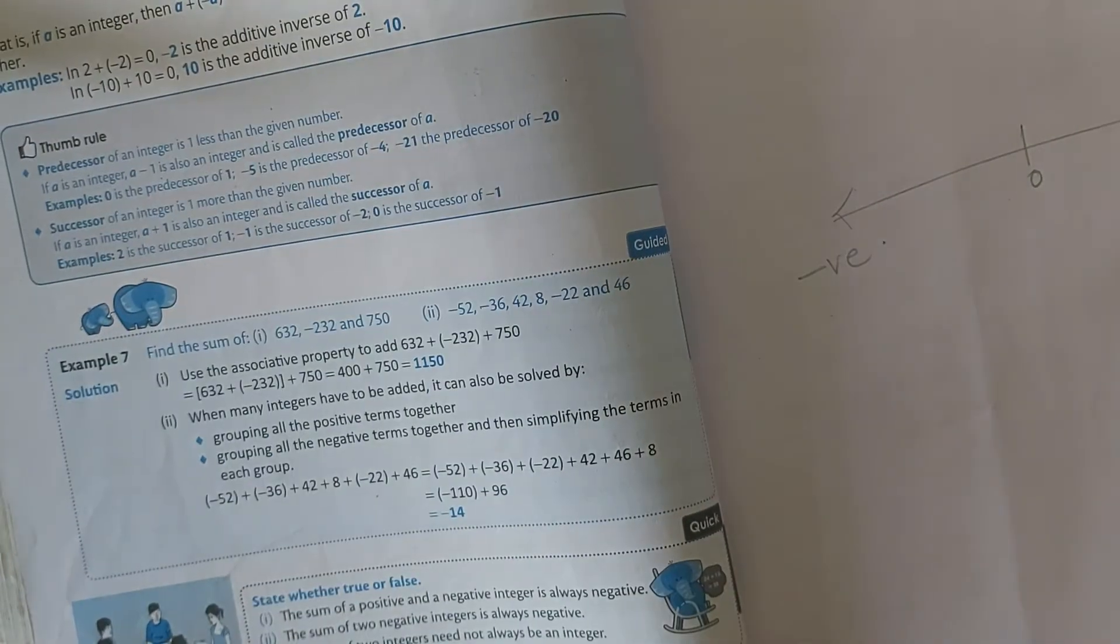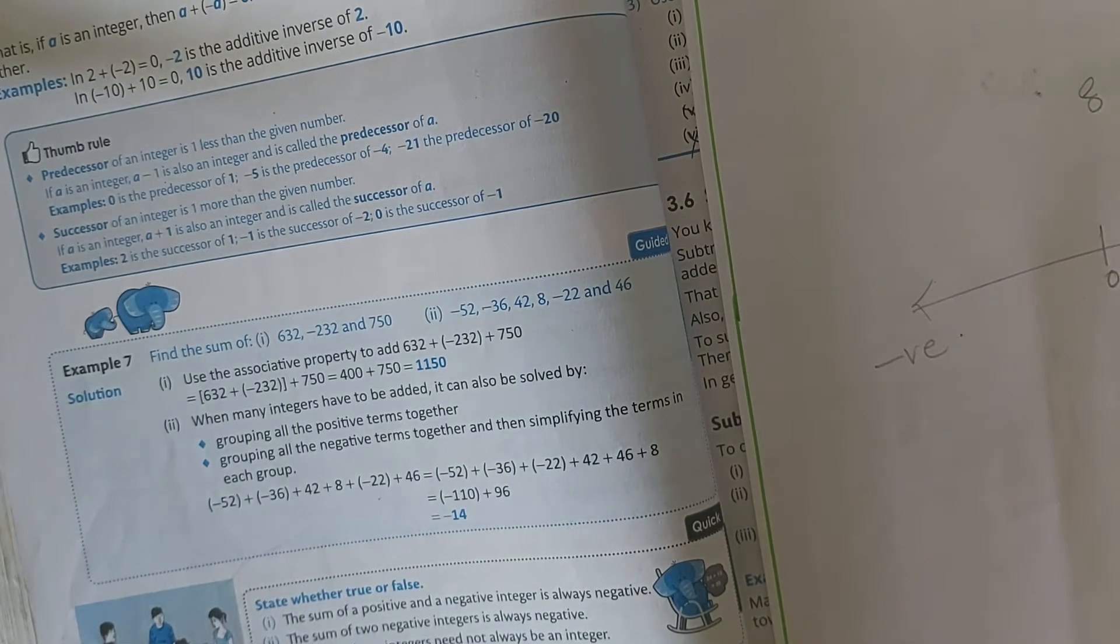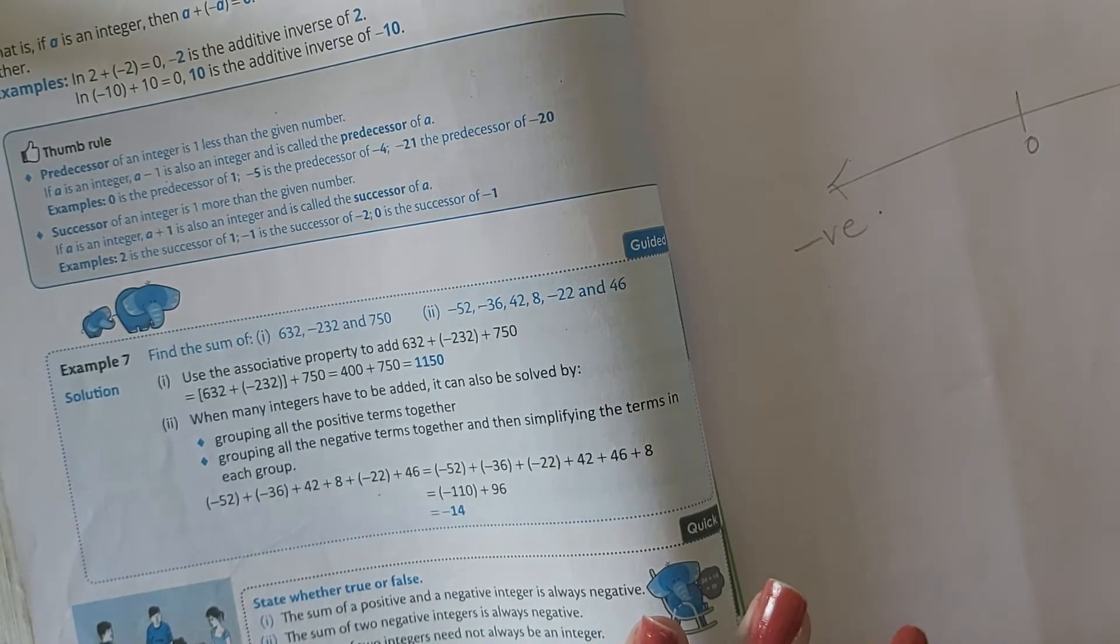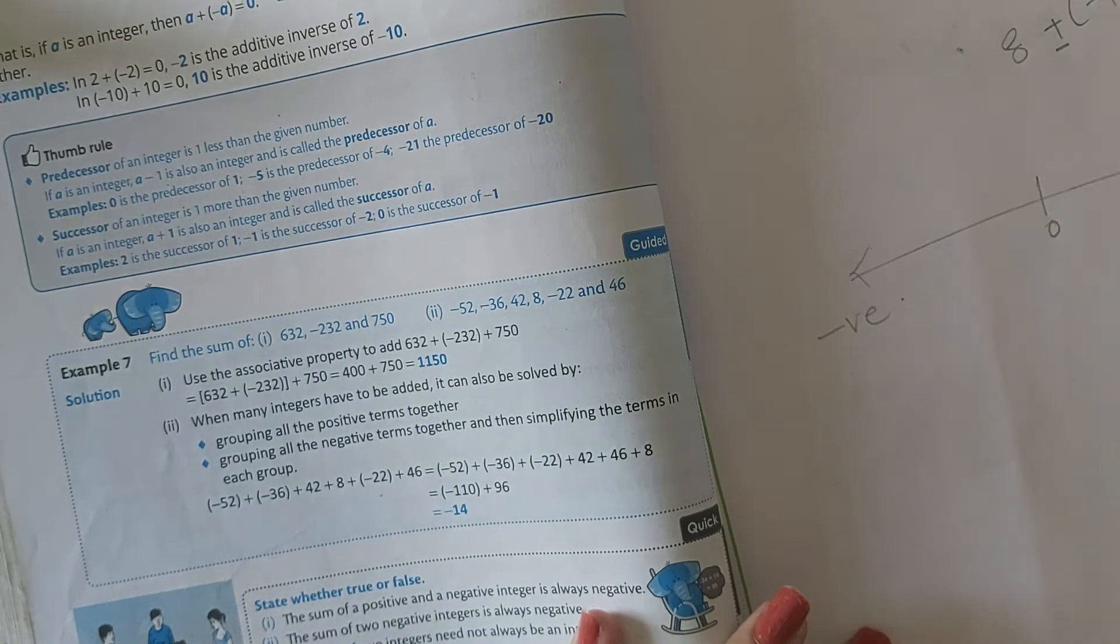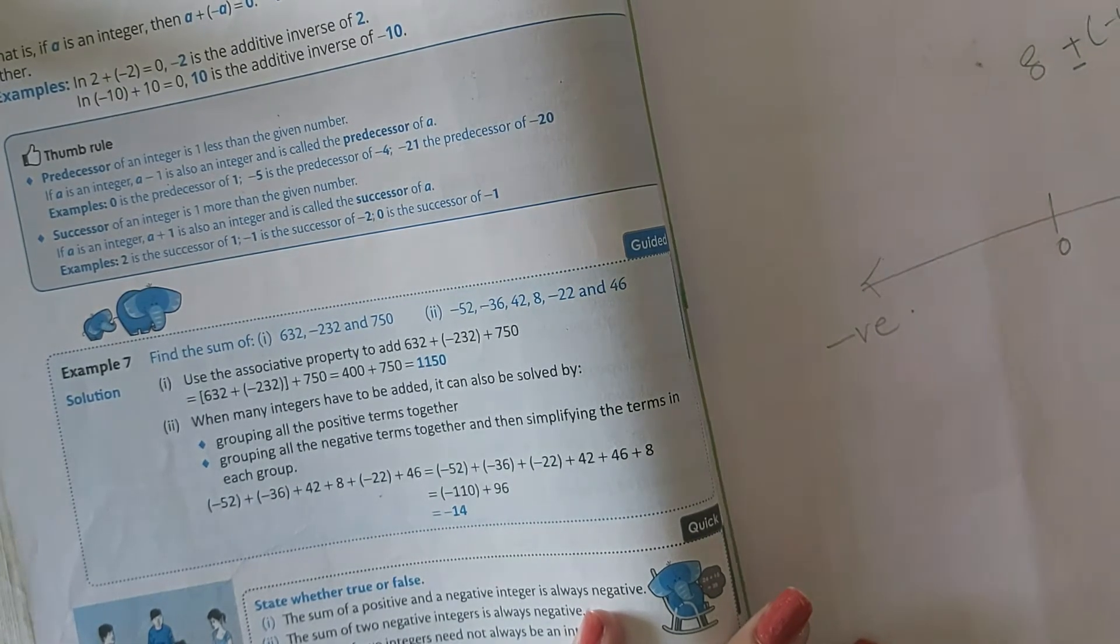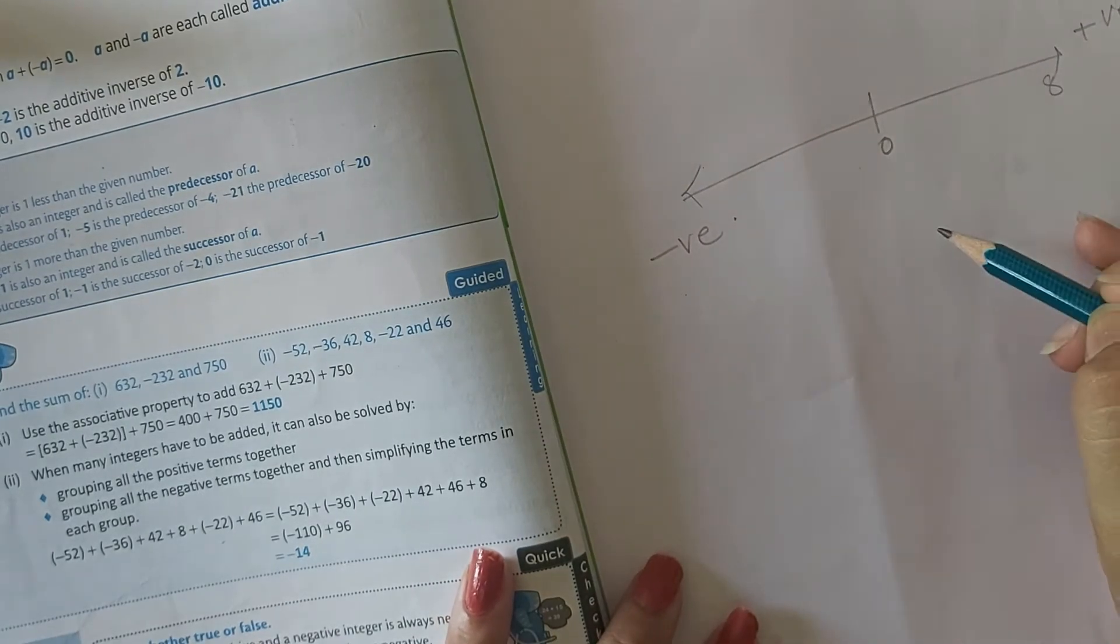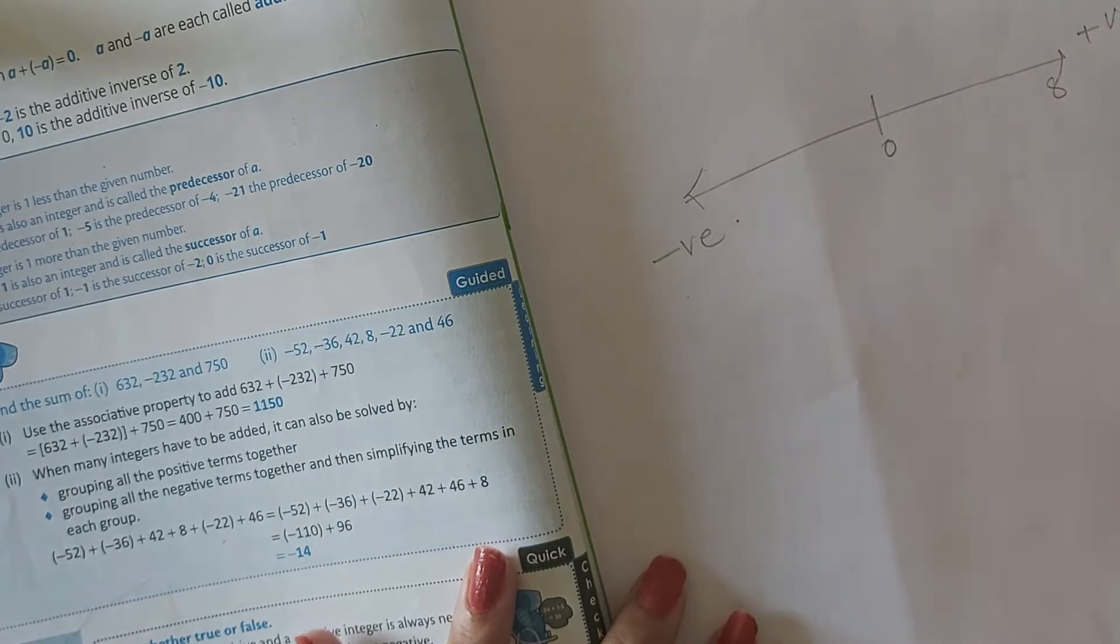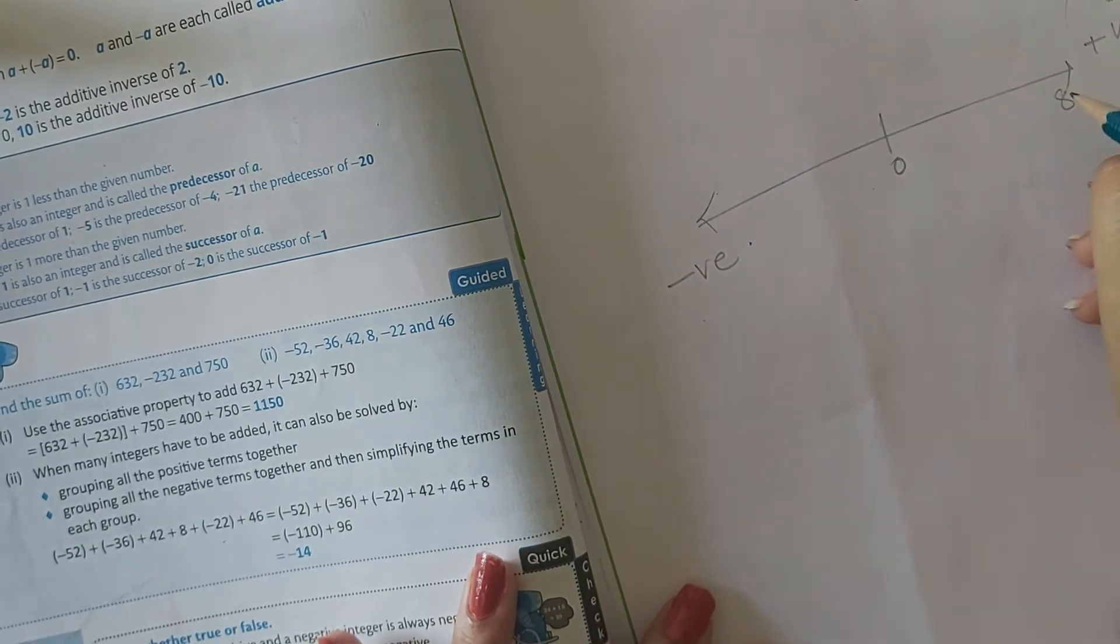Here it is 8. What is the question? 8 plus minus 4. Now, in addition and subtraction on the number line, if we are adding any positive number, we have to move to the right side. For example, if there is 8 plus 4, we will move from 8: 1, 2, 3, then 4. Now, it is 8 minus 4.